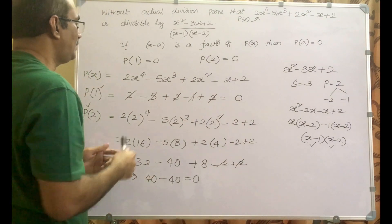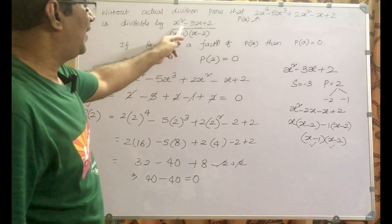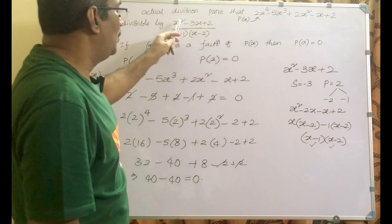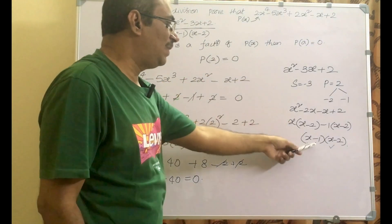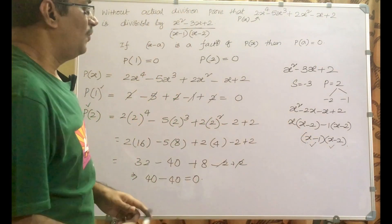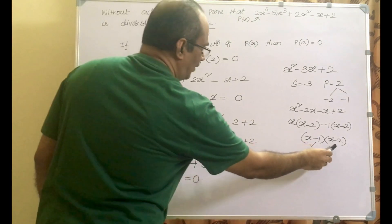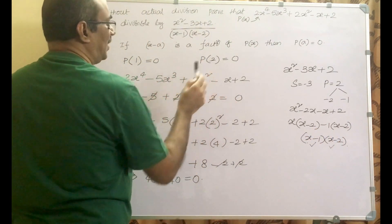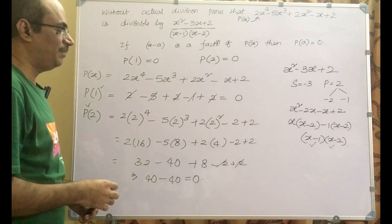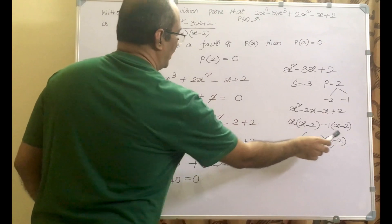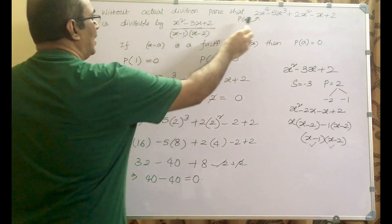Let us have a recap. Without actual division, prove that the given polynomial is divisible by x square minus 3x plus 2. We cannot directly use the factor theorem on a quadratic polynomial — the factor theorem needs a linear polynomial. So we took the quadratic polynomial, split the middle term, and got the product of two linear polynomials. We then proved p of 1 equals 0 and p of 2 equals 0, confirming that x minus 1 and x minus 2 are both factors. Therefore, their product x square minus 3x plus 2 is automatically a factor of the given polynomial.